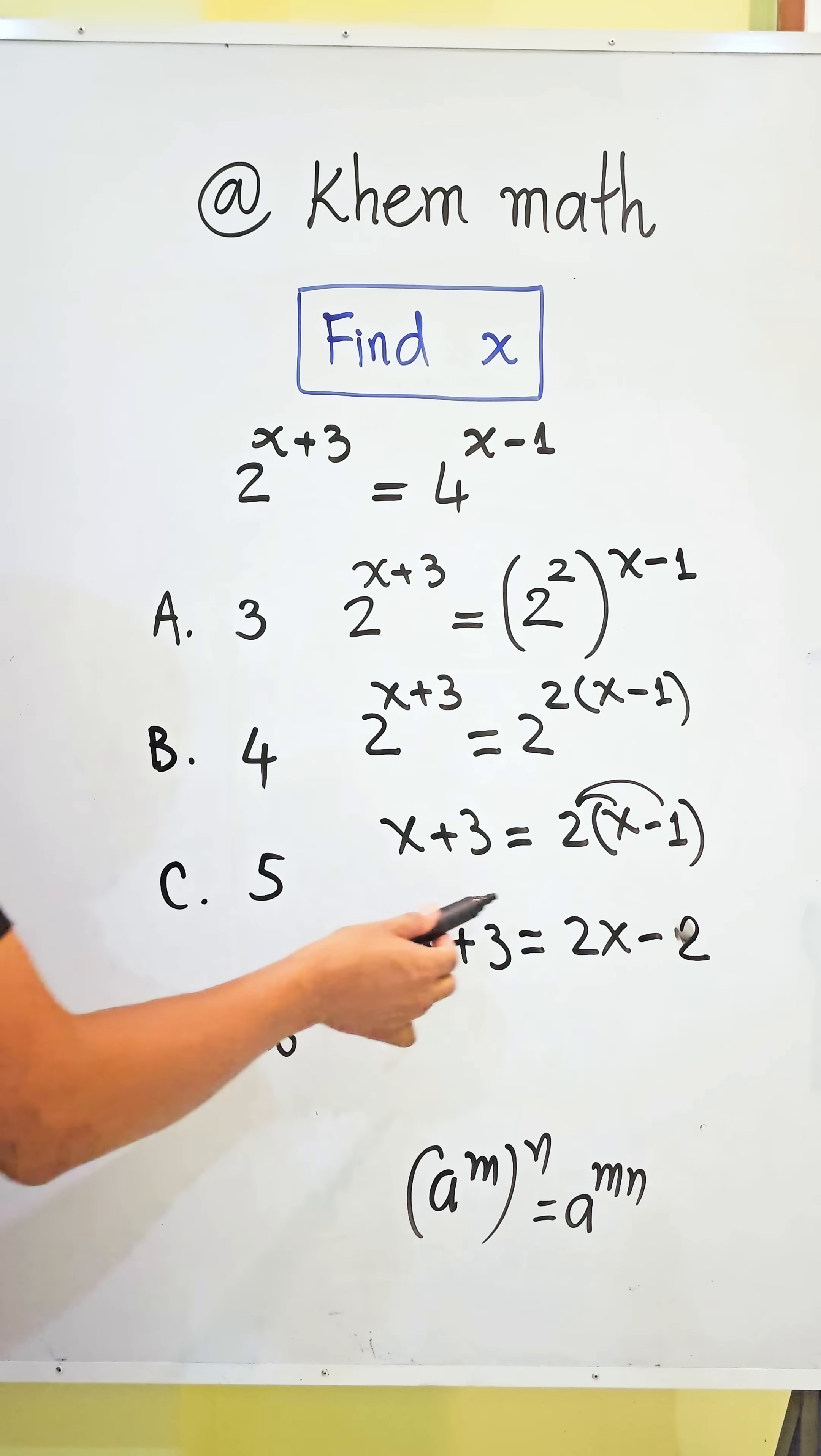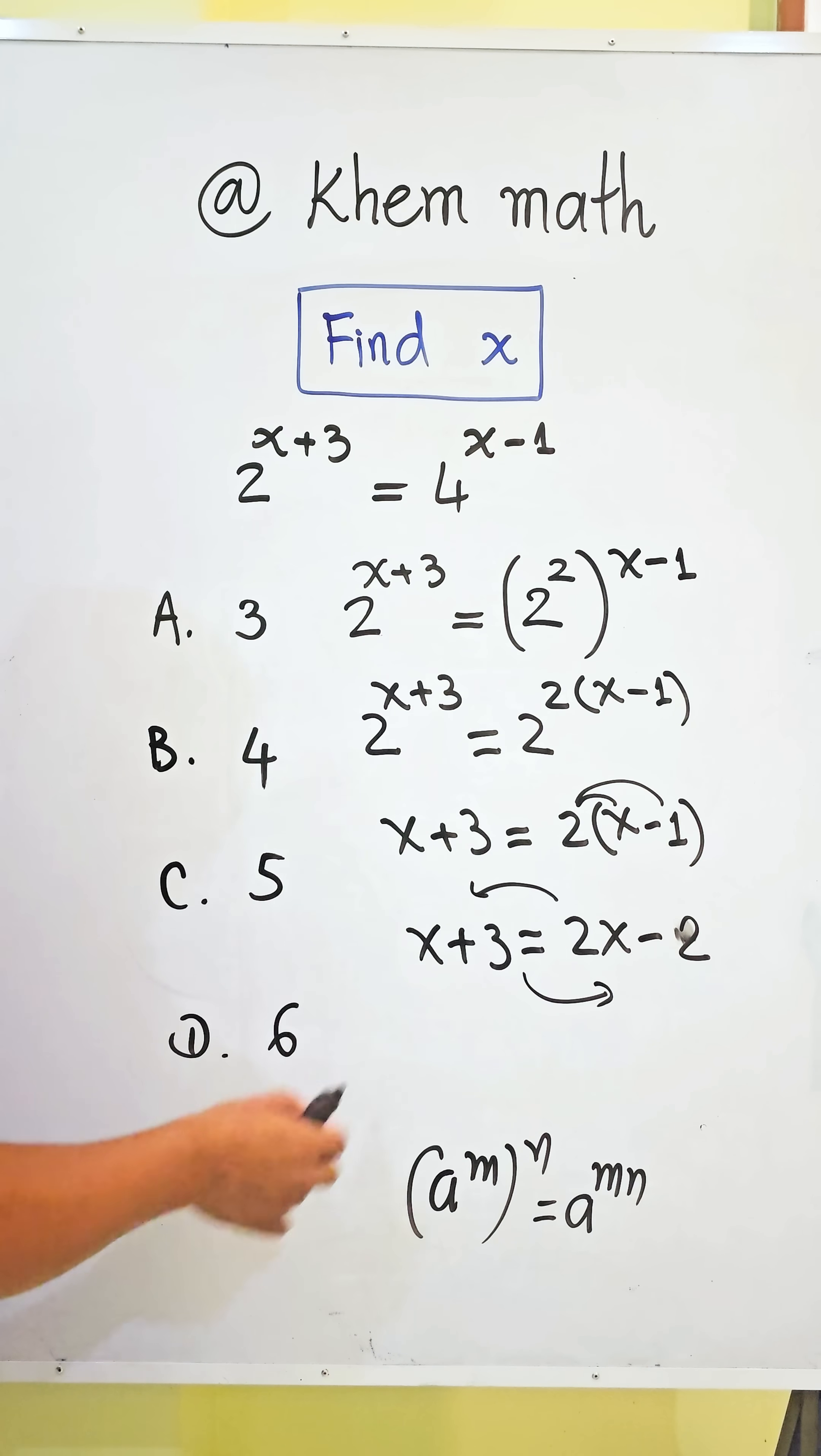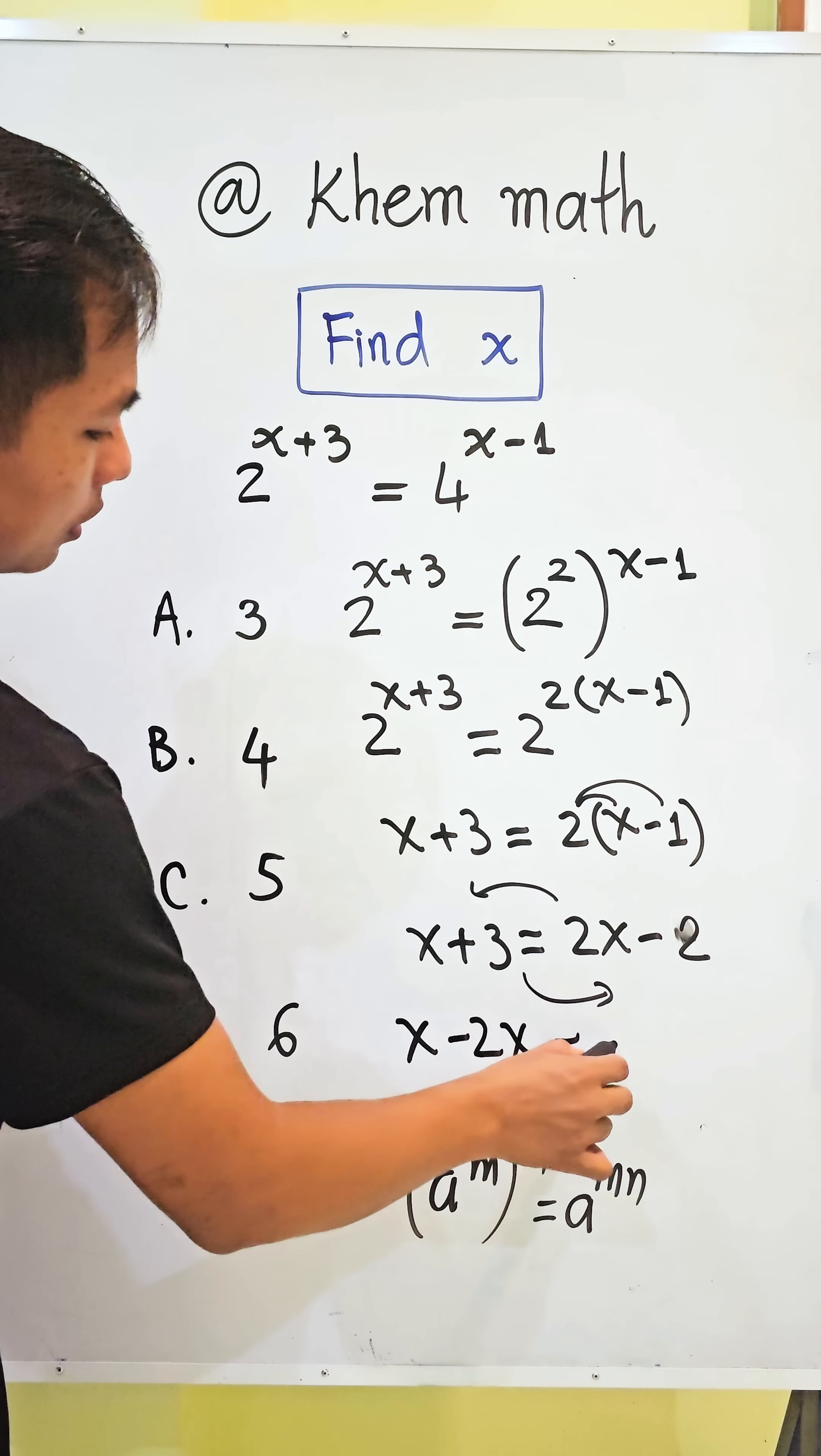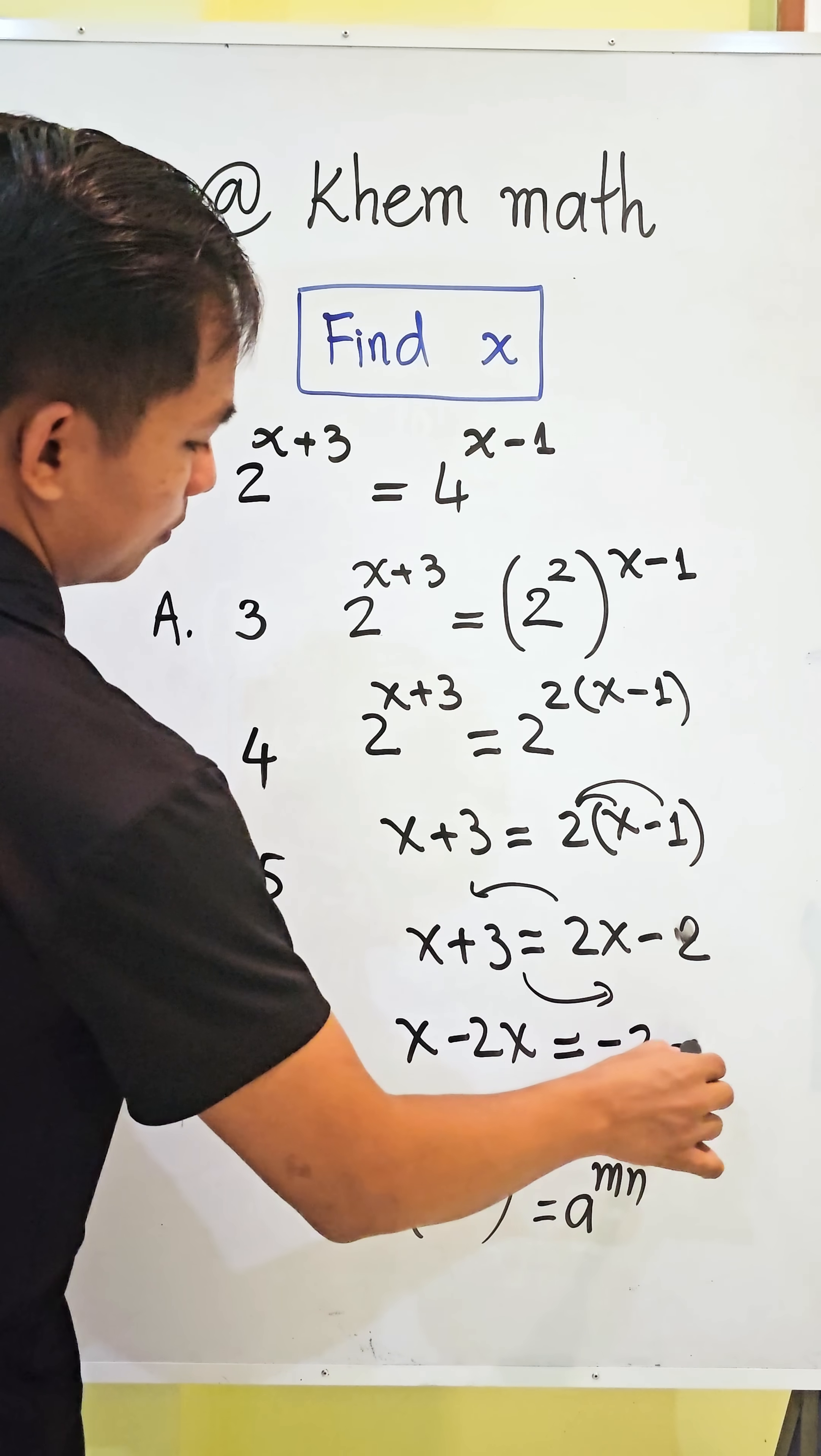And then, we change 2 from the right hand side to the left hand side, and we change 3 from the left hand side to the right hand side. We get x minus 2x equal to negative 2 minus 3.